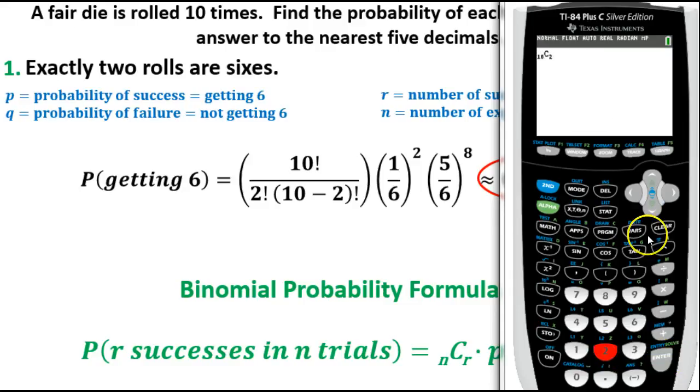Ten choose, then we'll type in two. From here, we're going to type in the rest of it exactly like we see. This is one-sixth squared times five-sixths raised to the eighth power. We just hit Enter.